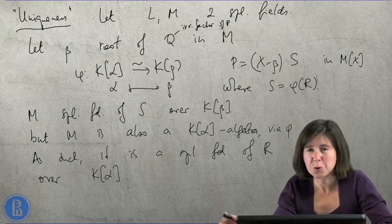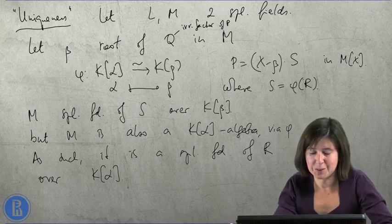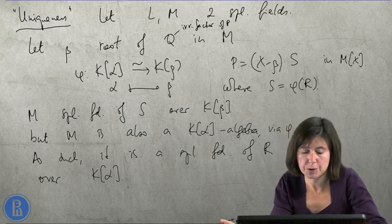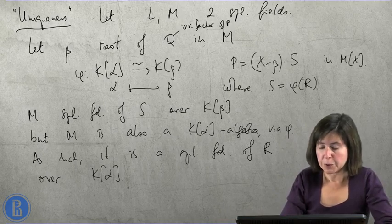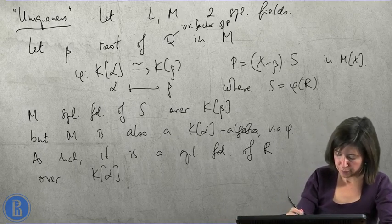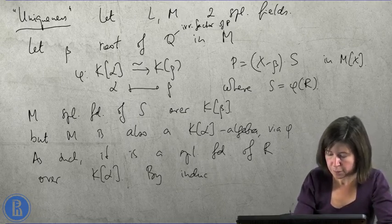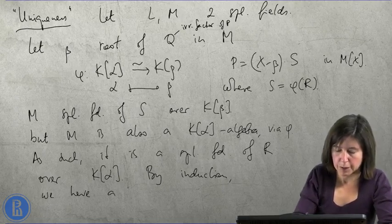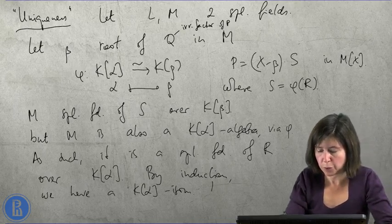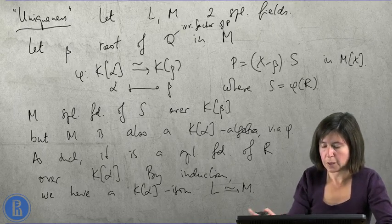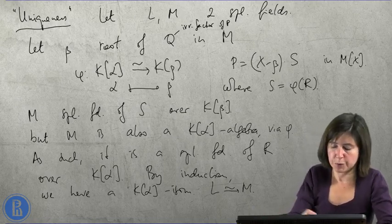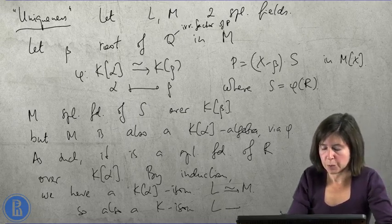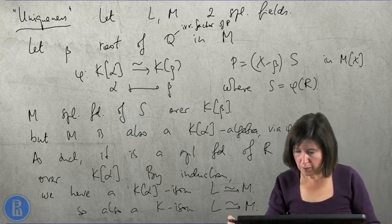it is a splitting field of r over k of alpha. You have to meditate about this a little bit, but this is true as soon as you view M as a k-algebra. You sort of take this phi into account. So, M is also a splitting field of r over k alpha. By induction, we have a k of alpha isomorphism from L to M. And, of course, we also have a k-isomorphism between L and M.